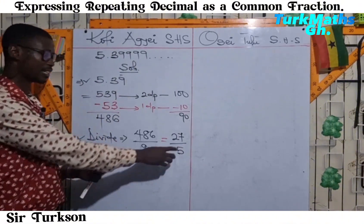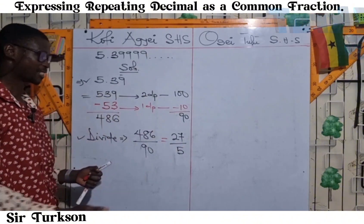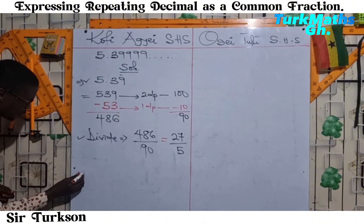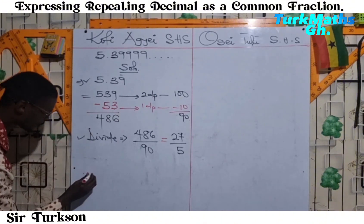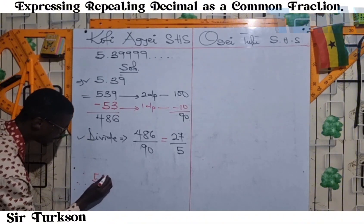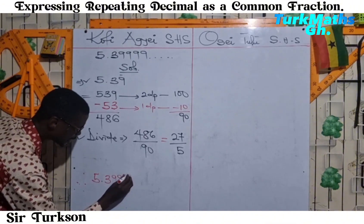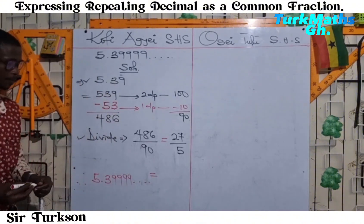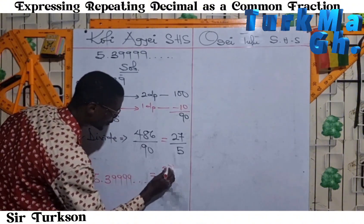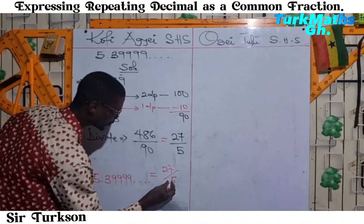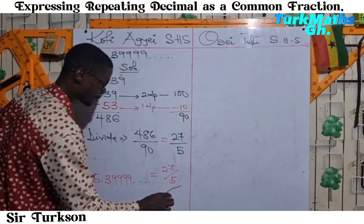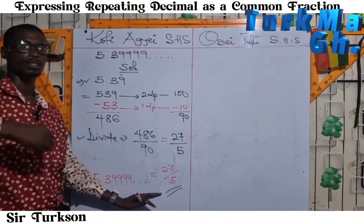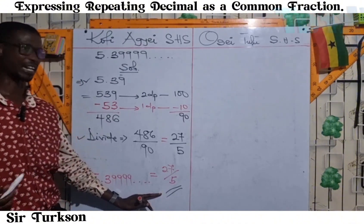We can also break this down to get a mixed number. So therefore, 5.39999 and so on and so forth is equal to 27 over 5. Very simple. And this is my method of expressing repeating decimals as a common fraction.